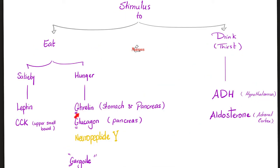Remember that ghrelin is for gluttony — it wants you to eat like mad and become obese. Glucagon, released in the fasting state, also wants you to eat because if you fast too long you will starve. Neuropeptide Y also wants you to eat. However, neurokinin wants you to vomit — that's a big difference. So ghrelin wants you to eat and become obese. On the other hand, leptin wants you to be thin.